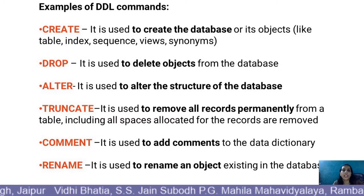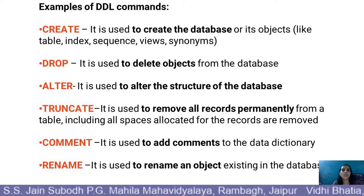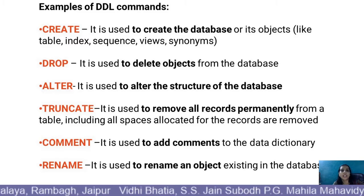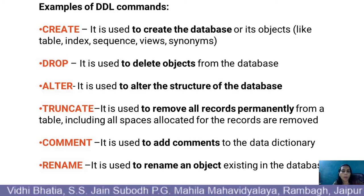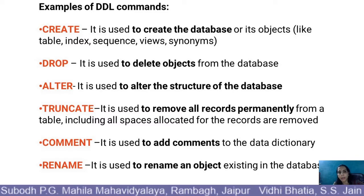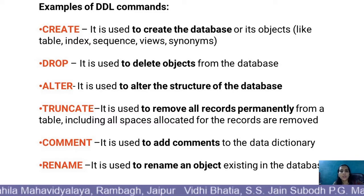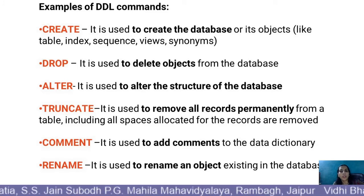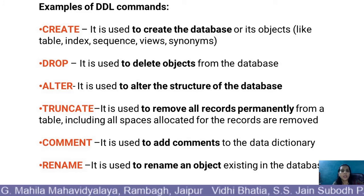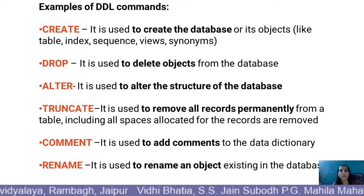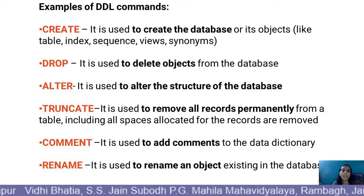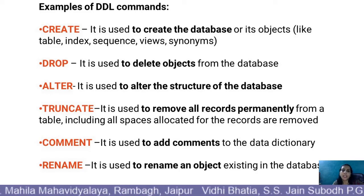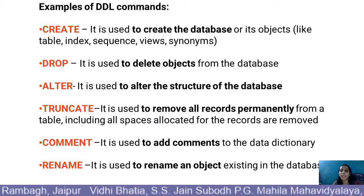Examples of DDL commands: Create command is used to create the database or its objects, like table, indexes, sequence, views, or synonyms. Drop is used to delete the objects from the database. Alter is used to alter the structure of the database. Truncate is used to remove all the records permanently from a table, including all the spaces allocated for the records. Comment is used to add comments to the data dictionary. Rename is used to rename an object existing in the database.